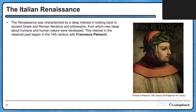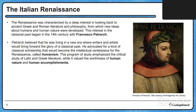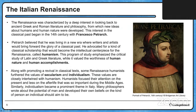The Renaissance is characterized by a deep interest in ancient Greek and Roman literature and philosophy, from which new ideas about humans and human nature were developed. This interest in the classical past began in the 14th century with Petrarch, who believed he was living in a new era where writers and artists would bring forward the glory of the classical past. He advocated for classical scholarship that became the intellectual centerpiece of the Renaissance — called humanism — a program of study emphasizing critical study of Latin and Greek literature while valuing the worthiness of human nature and human accomplishments. It's really important to see that word 'human' in humanism. Along with promoting a revival in classical texts, some Renaissance humanists furthered the values of secularism and individualism.